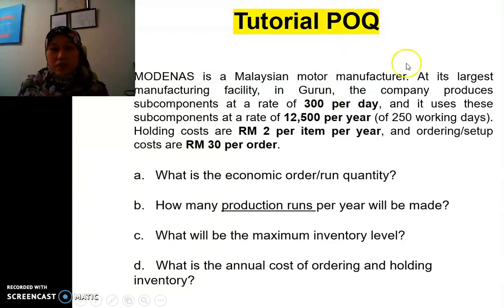So here we have 300, and it uses this subcomponent at the rate of 12,500 per year. That means for assembly, in which it also means the demand for the motorcycle is 12,500 per year, and it gives us 250 working days, and the holding cost is RM2 per item, and then the ordering or setup cost is RM30.